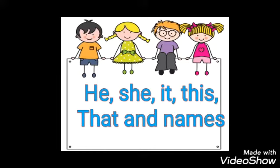Aur names ke saath kaise? Jaise Ram is very handsome — Ram bahut zyada handsome hai. Aur Sita is very intelligent — Sita is matlab hai, very matlab bahut, intelligent matlab bahut zyada hoshiyar. To Sita bahut zyada hoshiyar hai. Samjhe hai?